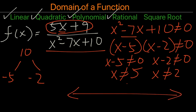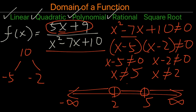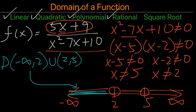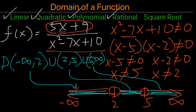When writing out the interval notation, we have 2 and 5, both open circles. Any value in those regions can be held true. So the domain will be written as negative infinity to 2, union 2 to 5, union 5 to infinity.